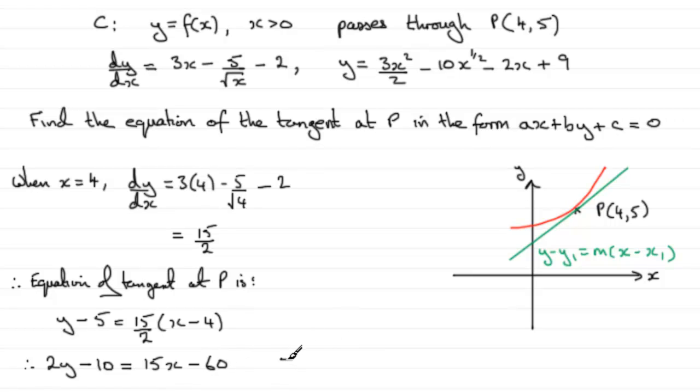Now, if we want this in the form of AX plus BY plus C equals 0, starting with a positive X term, then we've got the 15X, but we're going to need to subtract 2Y from both sides and also add 10 to both sides. So minus 60 plus 10 is minus 50, and that will equal 0. And there's your form of the equation of the tangent in that particular form.